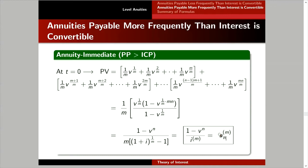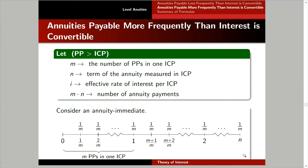Why is the coefficient 1? Going back to the timeline: even though each individual payment is 1 over m, you add all the payments made in one ICP and you get 1. The same applies for the second ICP — summing all payments gives 1. So the sum of all payments within one ICP is how you find the coefficient of a-angle-n upper m. You will see an example later.